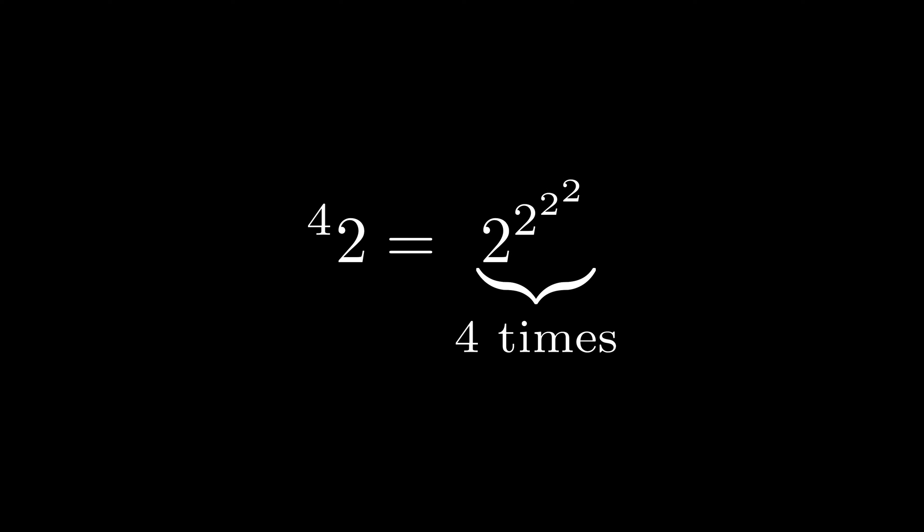For example, the fourth tetration of 2 is defined as 2 to the power of 2 to the power of 2 to the power of 2, four times.